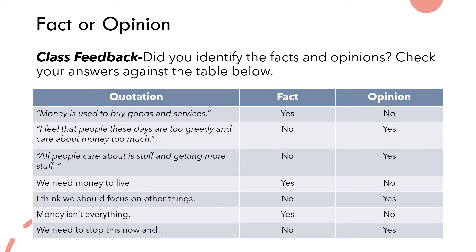The first one: 'Money is used to buy goods and services' — it is a fact. We all know it's a fact because it is the main function that money holds in society. Number two: 'I feel that people these days are too greedy and care about money too much.' It might be something that you agree with, but the fact that they've used the personal pronoun 'I' tells us that they're going to express their own personal view and not something based on fact. So it is an opinion.